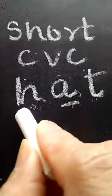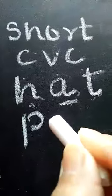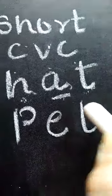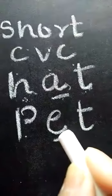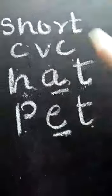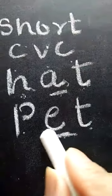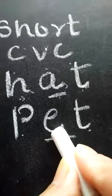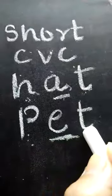One more example. Consonant, vowel, consonant — we write P-E-T. This is a short vowel, so we pronounce the short E sound: P-E-T, pet.